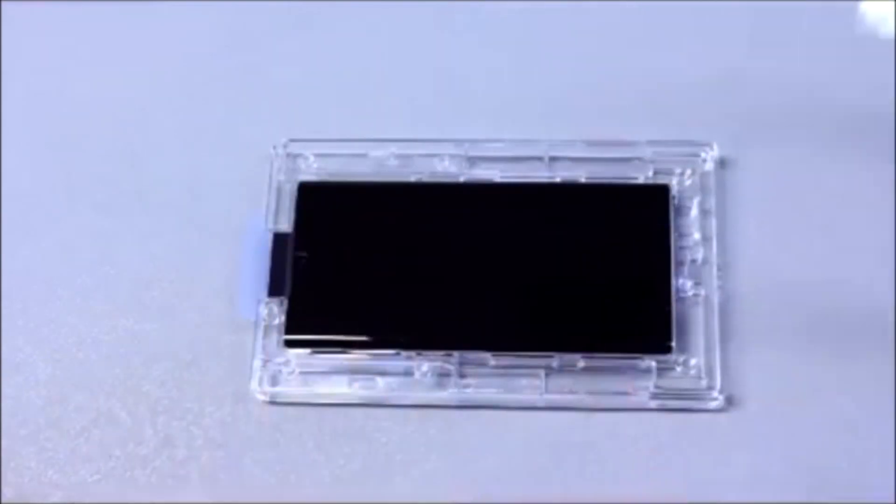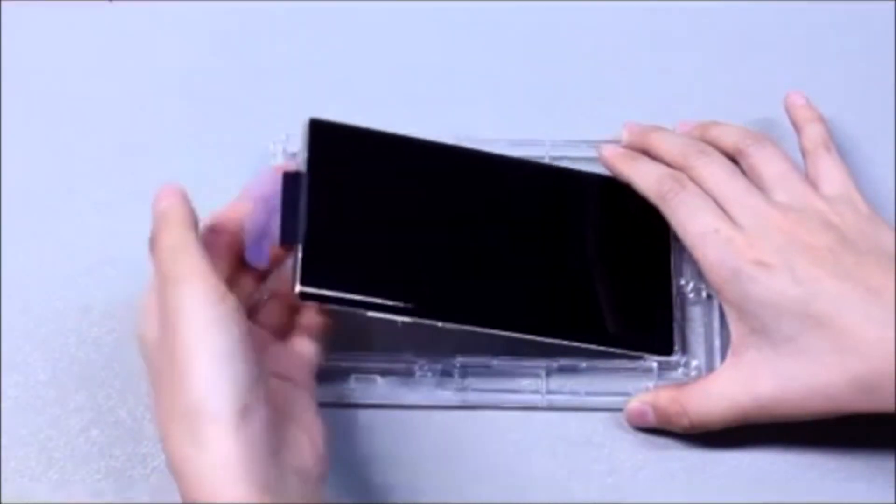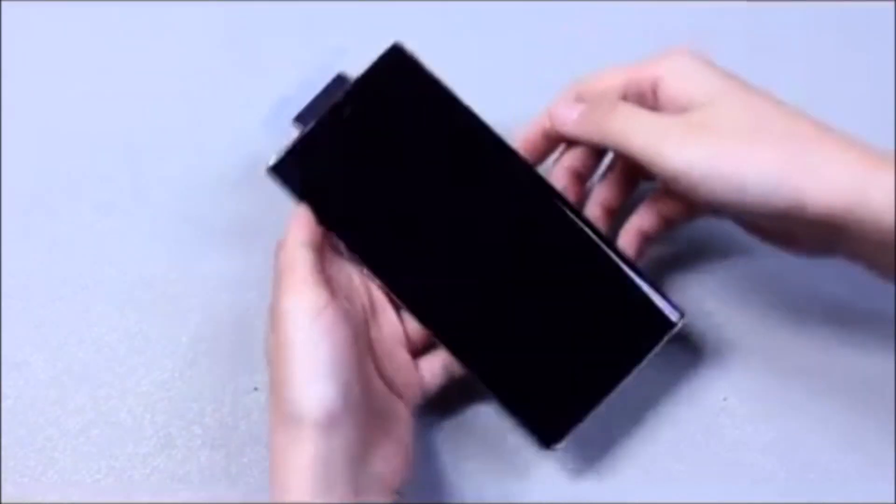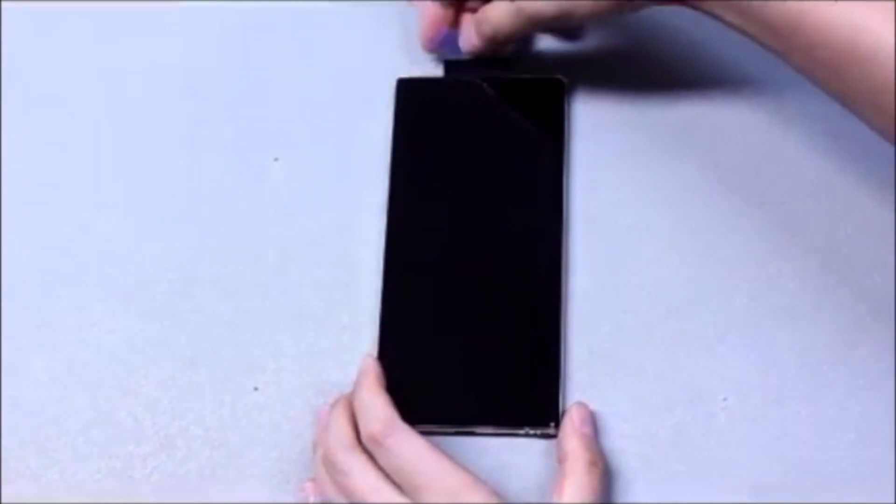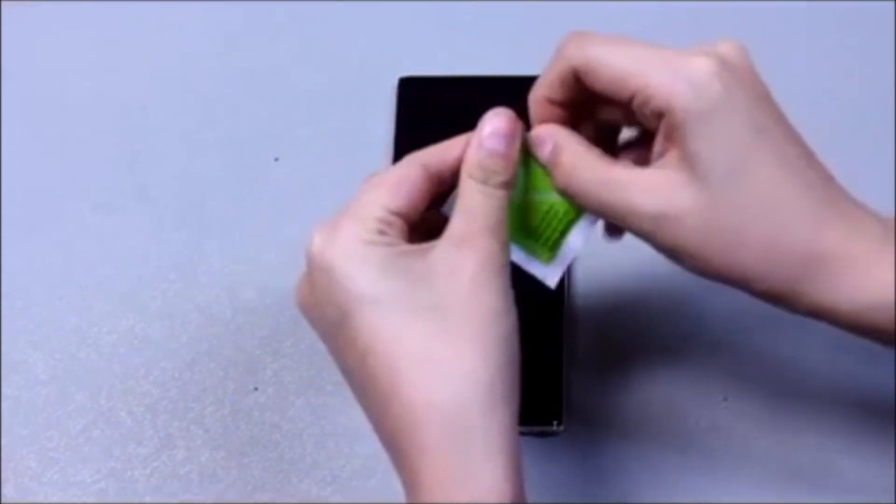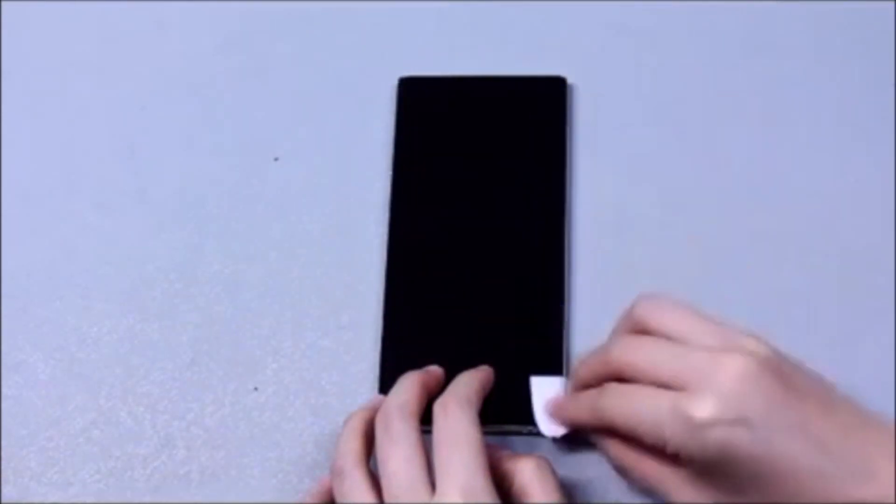Now, remove the top tray case and carefully remove your Note 10 from the bottom tray. Carefully remove the adhesive tape. Once removed, wipe it down again with a new alcohol pad along all the edges.